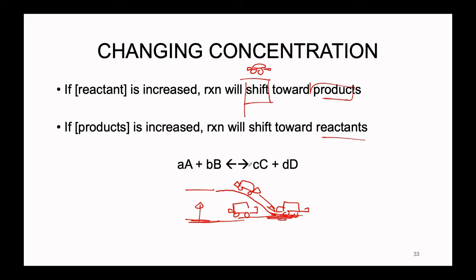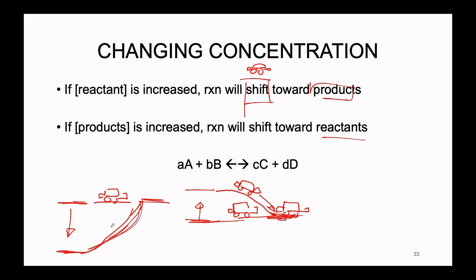The opposite is also true. If we start at equilibrium — where forward and reverse rates are equal — and decrease the amount of reactant, by precipitating it or causing a secondary reaction, the track becomes lower on the reactant side. Our Hot Wheels car rolls down toward the reactant state. In other words, if we decrease the concentration of reactant, according to Le Chatelier's principle, the reaction will spontaneously shift in reverse to create more reactant and re-reach equilibrium.